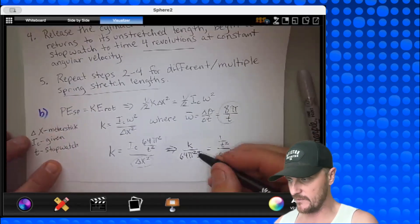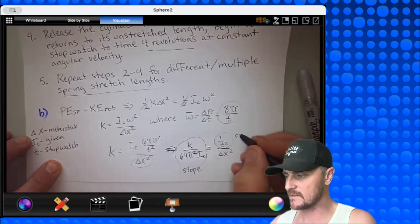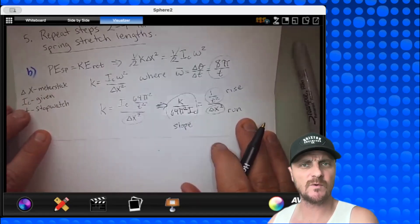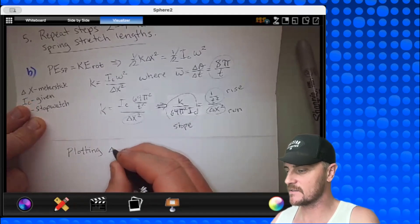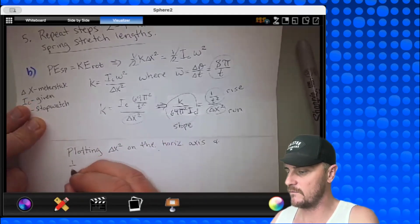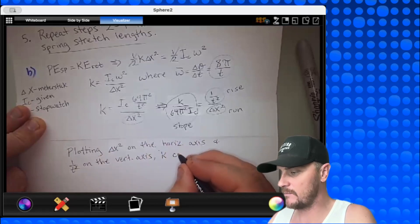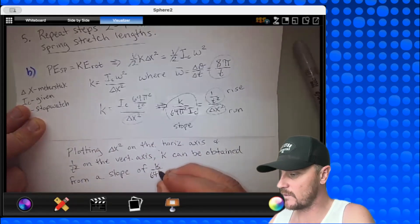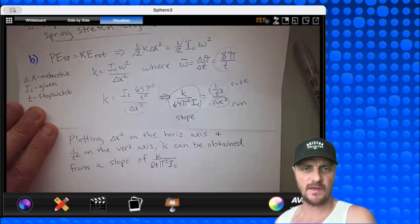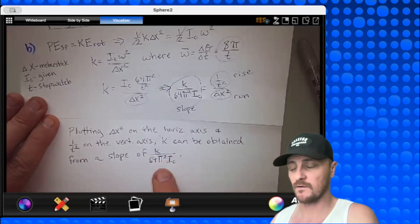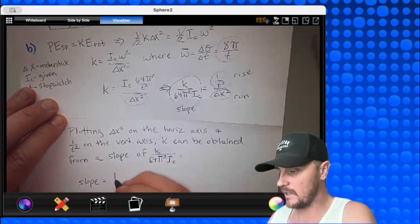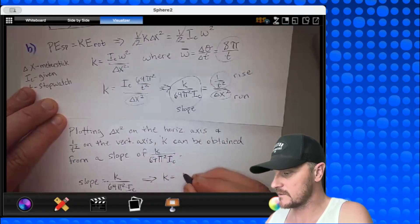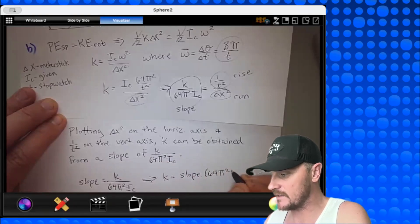And there's my answer right there, believe it or not. This would be my slope, which is equal to a rise of 1 over t squared over a run of delta x squared. So let's make a little formal statement to them. We are going to say plotting delta x squared on the horizontal axis and 1 over t squared on the vertical axis. K can be obtained, that is the spring constant, from a slope of K over 64 pi squared IC. The last thing to show them, so that they really know you know what you're talking about, is to show this calculation. So I will say slope equals K over 64 pi squared IC. Let's solve for K. And K equals slope times 64 pi squared IC. And all done. Let's move on to part C.